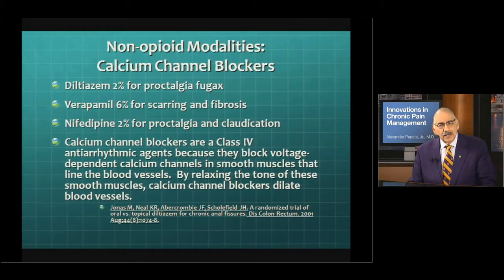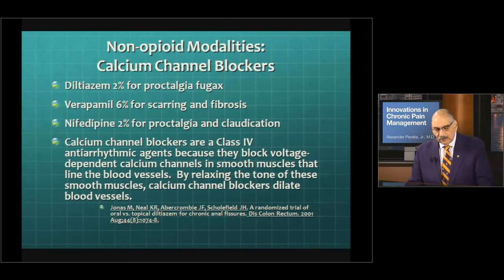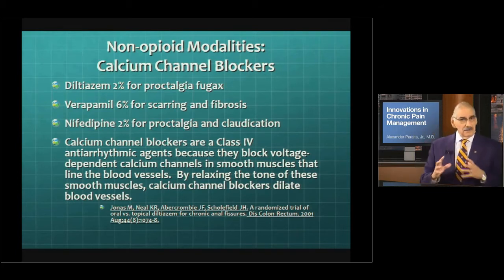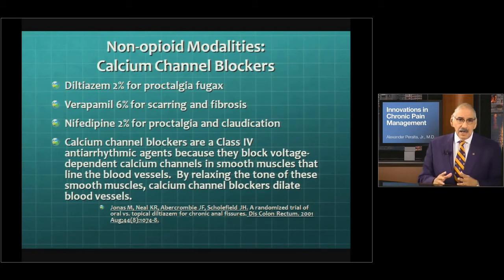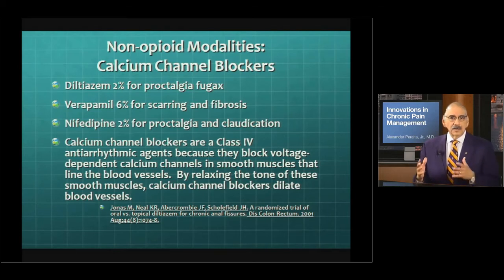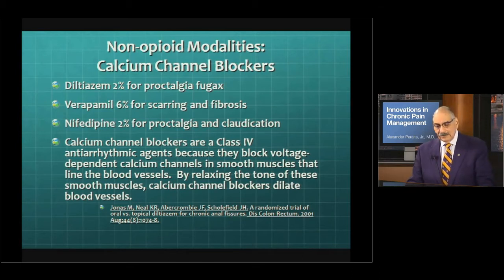Calcium channel blockers can be used for pain — for ischemic pain specifically: diltiazem, verapamil, nifedipine. These calcium channel blockers are class 4 antiarrhythmics. What they really do is block the voltage-dependent calcium channels in smooth muscles, and therefore they cause vasodilation. Ischemic pain — especially in patients with severe peripheral arterial disease, peripheral vascular disease, and severe ischemic pain because of chronic smoking, arteriosclerosis, and atherosclerosis — is pretty severe. This becomes part of the regimen, also in a topical form at different percentages, to help relieve that type of pain.